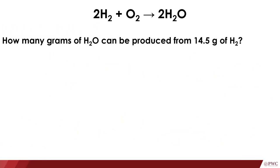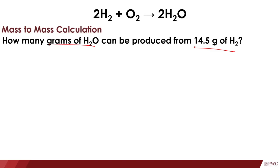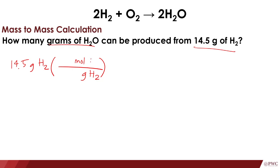Next, last set of questions: how many grams of H₂O can be produced from 14.5 grams of H₂? Here, the given is in grams, and we're going to determine the grams of another substance from the same reaction — this is a mass-to-mass calculation. The given is 14.5 grams of H₂. We're going to convert this first to the number of moles of H₂.